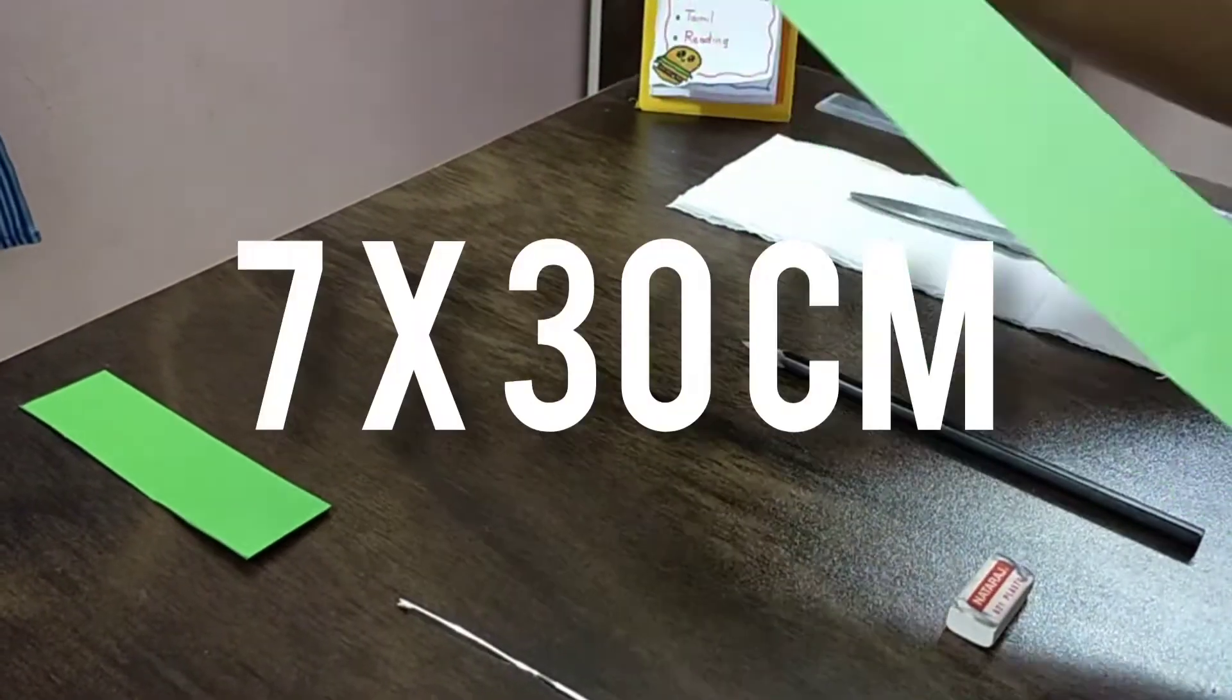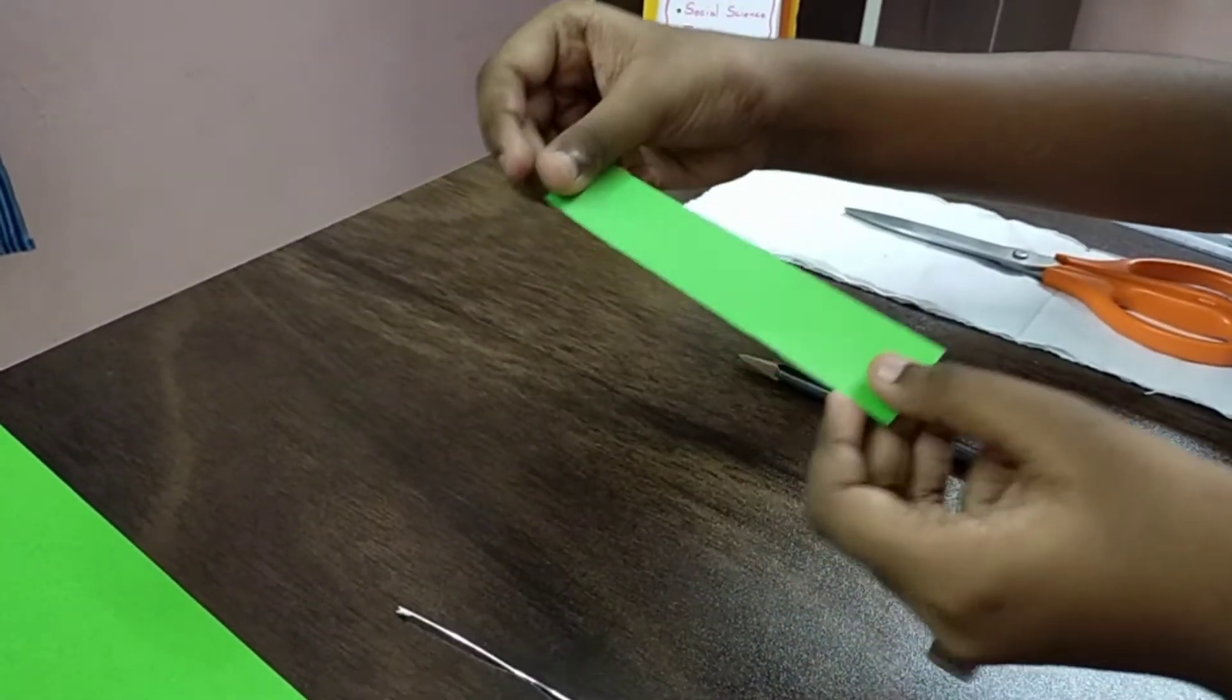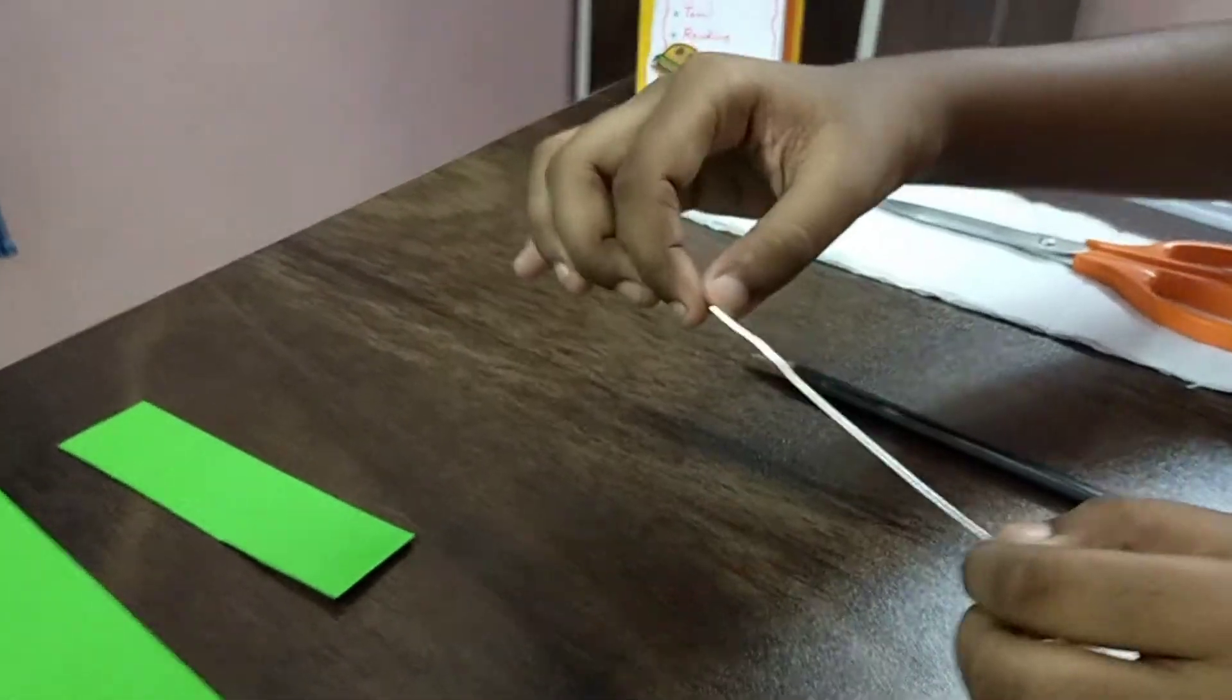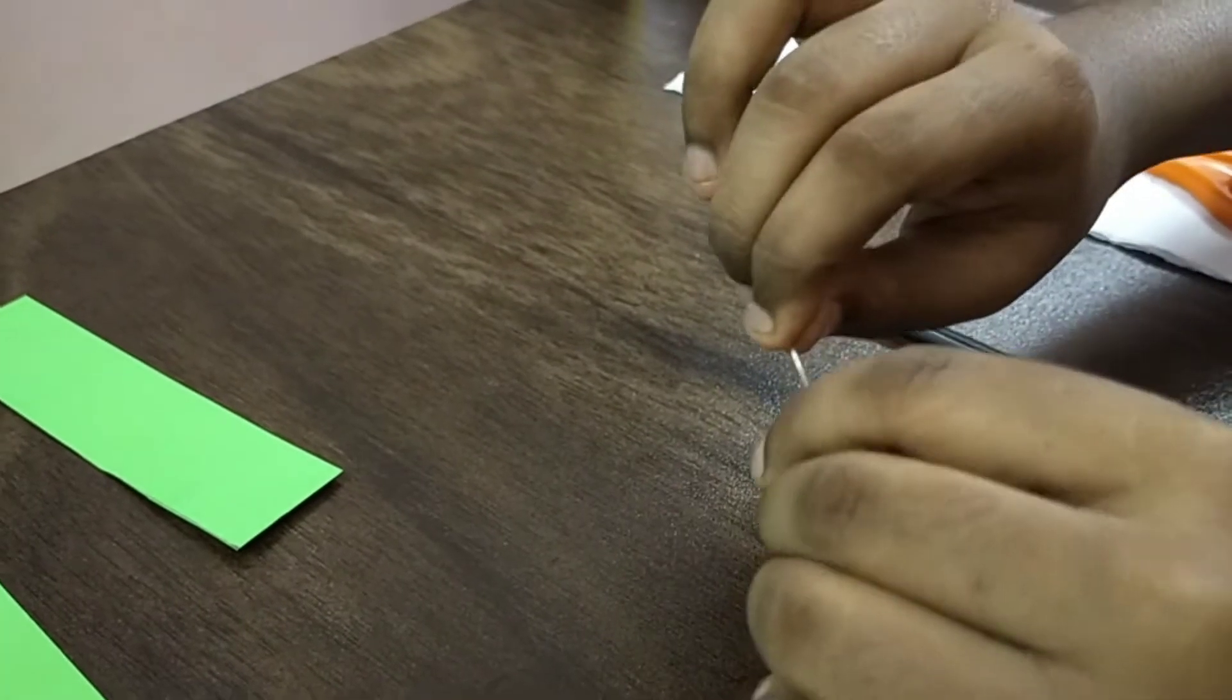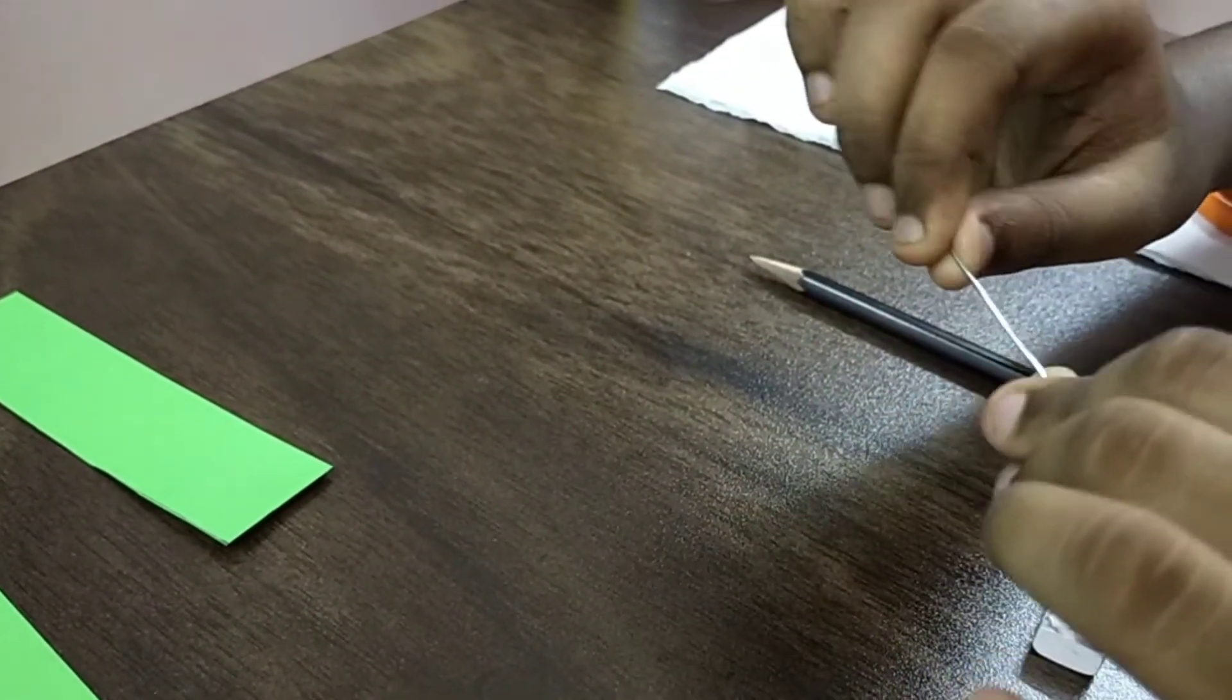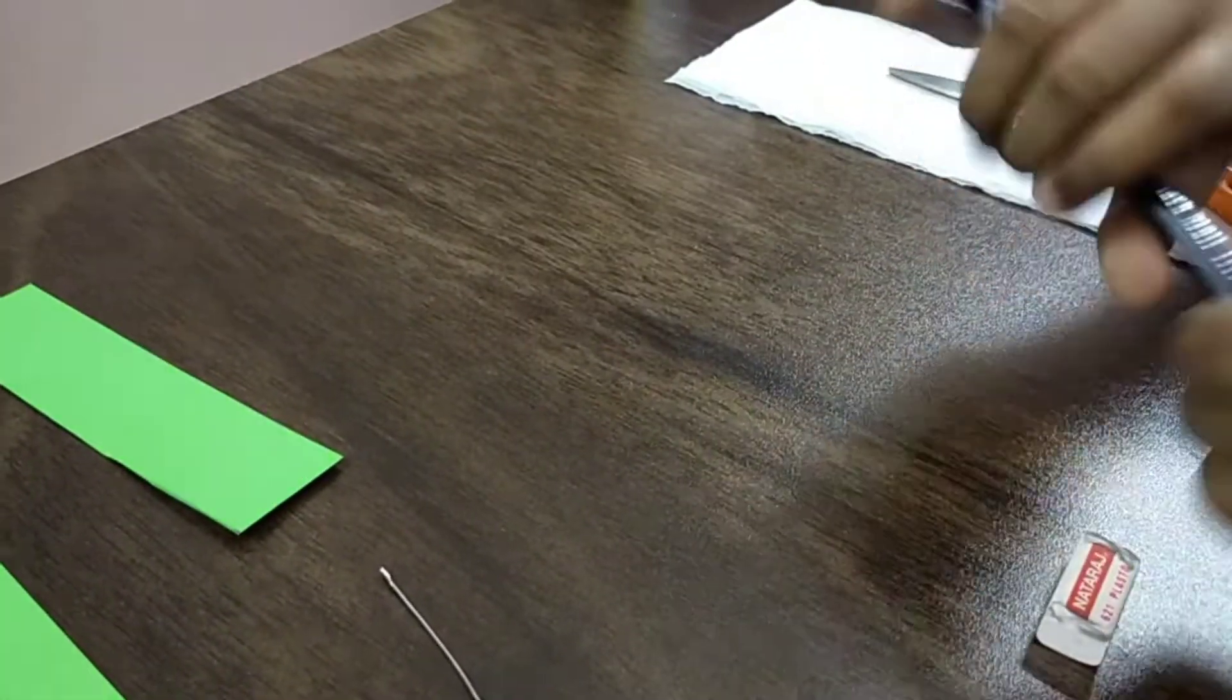I'll let you know the things we need. You need a green paper that measures 7 by 30 centimeters. And you need another green paper measuring 3 by 12 centimeters. And this is a craft wire - it's able to bend and go back to its shape like this, and that's totally affordable. It's called craft wire.